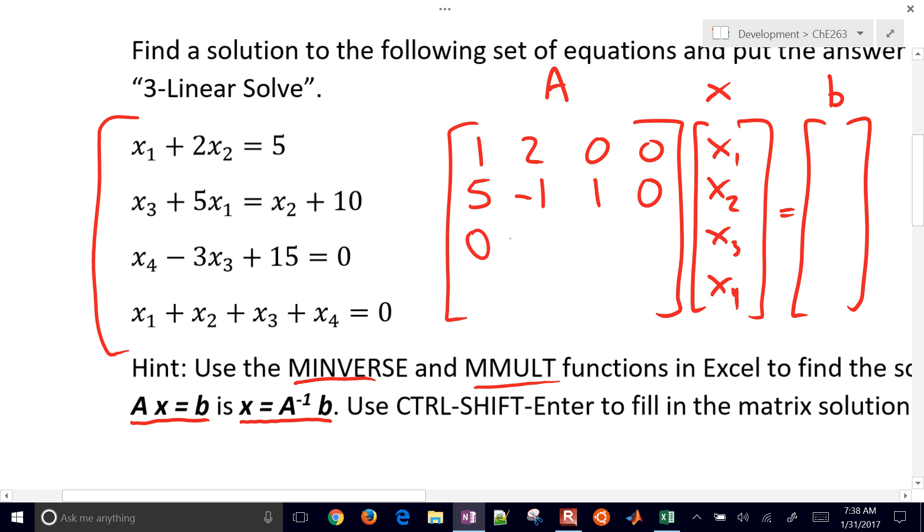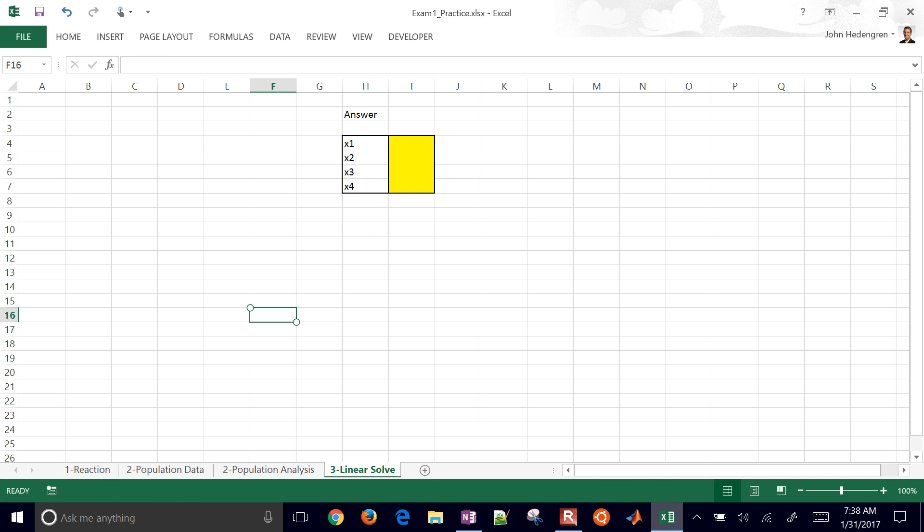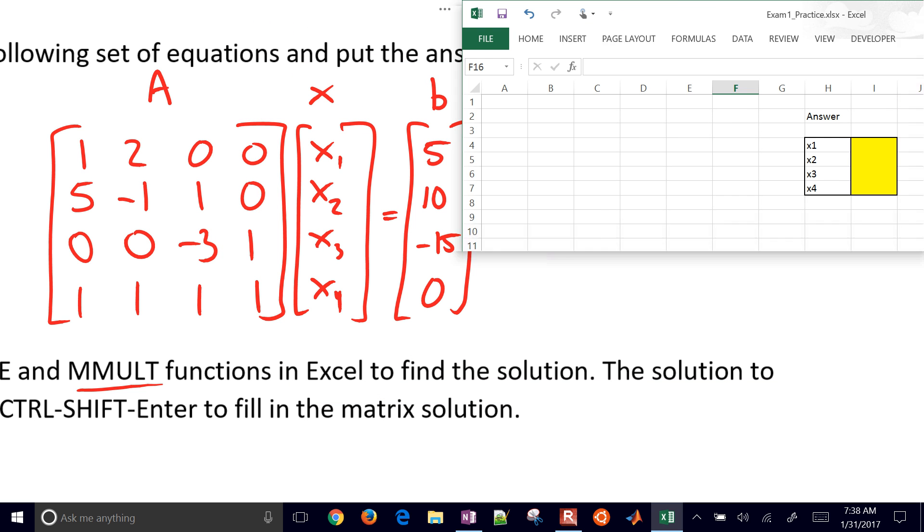And let's see, we have no X1 and X2 in this equation. We have a negative three and a positive one. Oops, I forgot the right-hand side here. Let me put a five here. I'll put a ten right here, a negative 15. I've got to move that to the right-hand side. And then I'm going to put a bunch of ones right there with a zero. Okay, so now we want to take this matrix right here, and we're going to solve this with Excel.